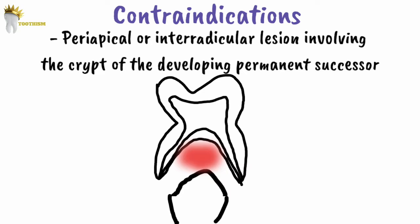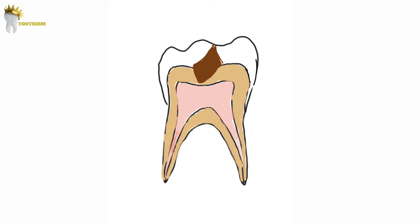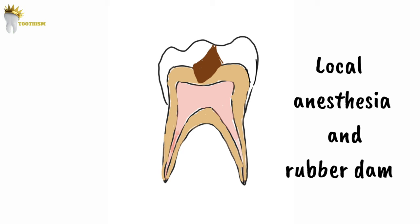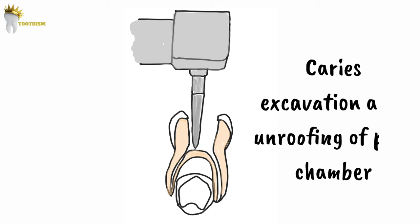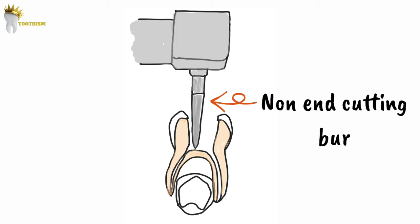Now let's see how it's done. This is a primary mandibular second molar which is carious and the coronal and radicular pulp is irreversibly inflamed. As in permanent endodontic therapy, the main objective of biomechanical preparation here is debridement of the canals. First step is local anesthesia and rubber dam placement, then caries removal along with unroofing of the pulp chamber. The roof is removed safely using a non-end-cutting burr, since the floor of the pulp chamber is very thin in primary teeth, ensuring we don't accidentally perforate it.